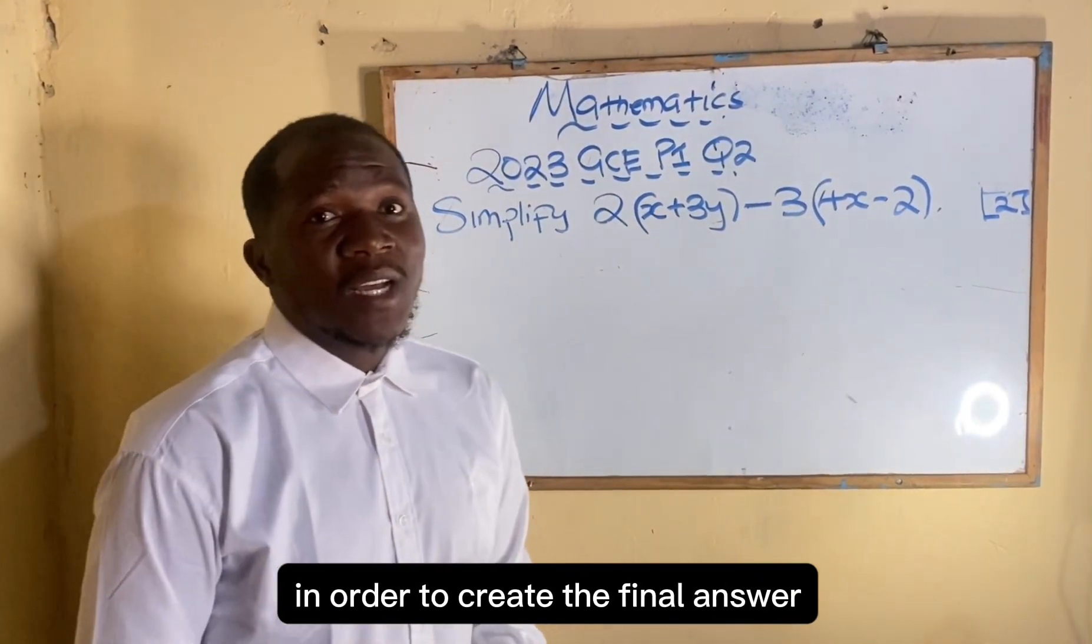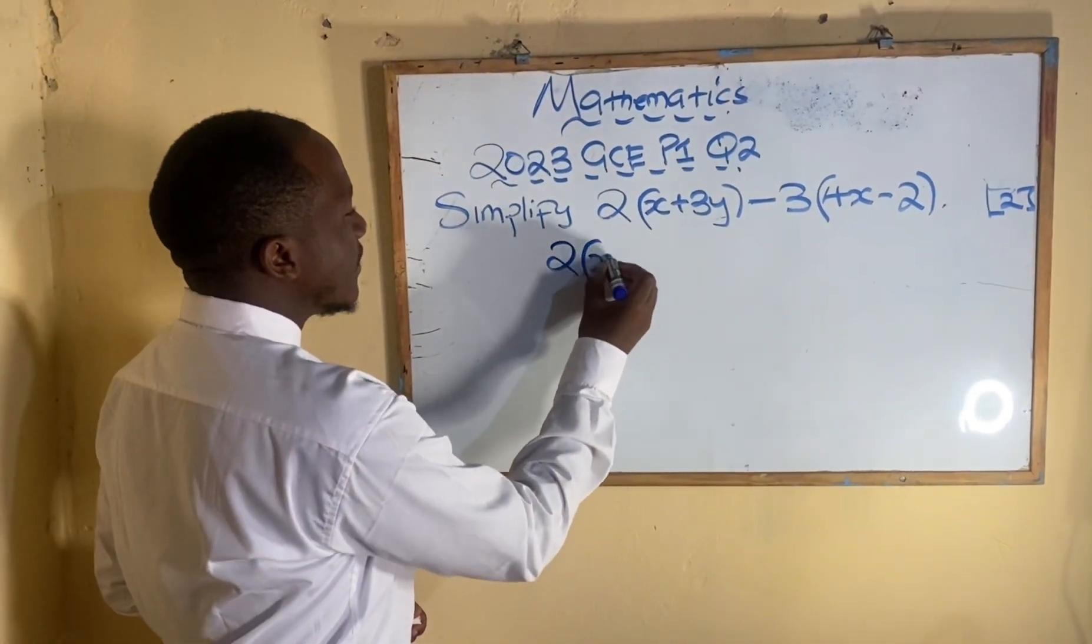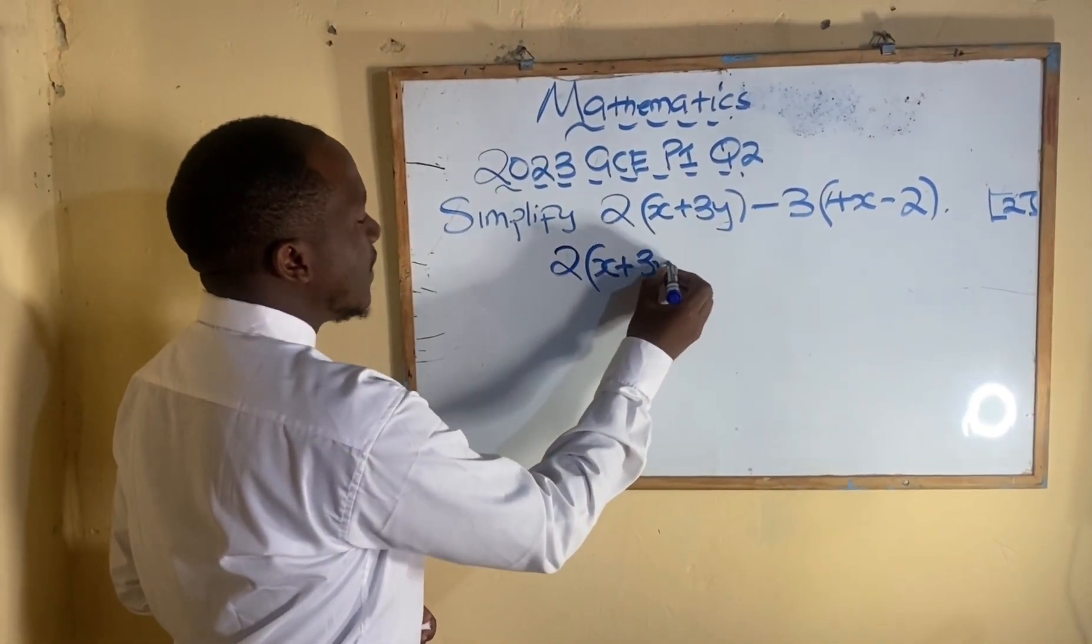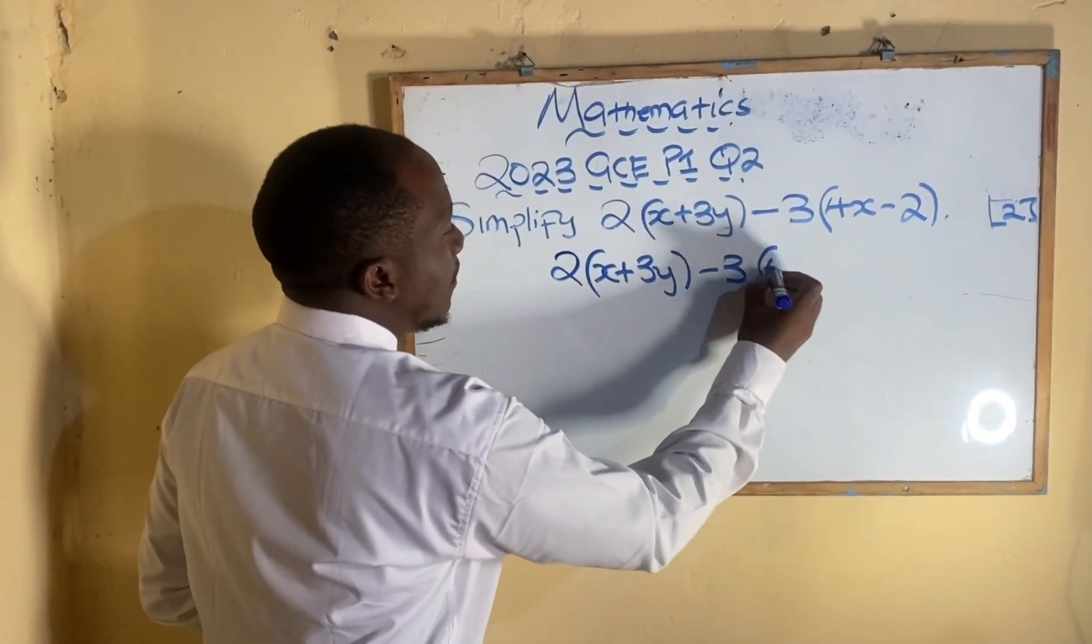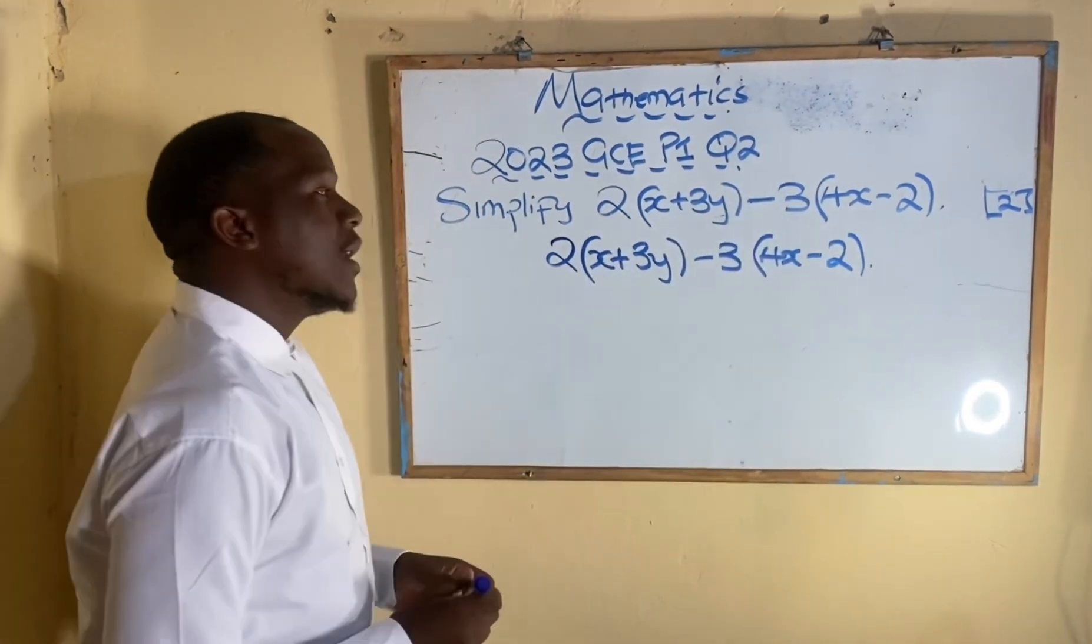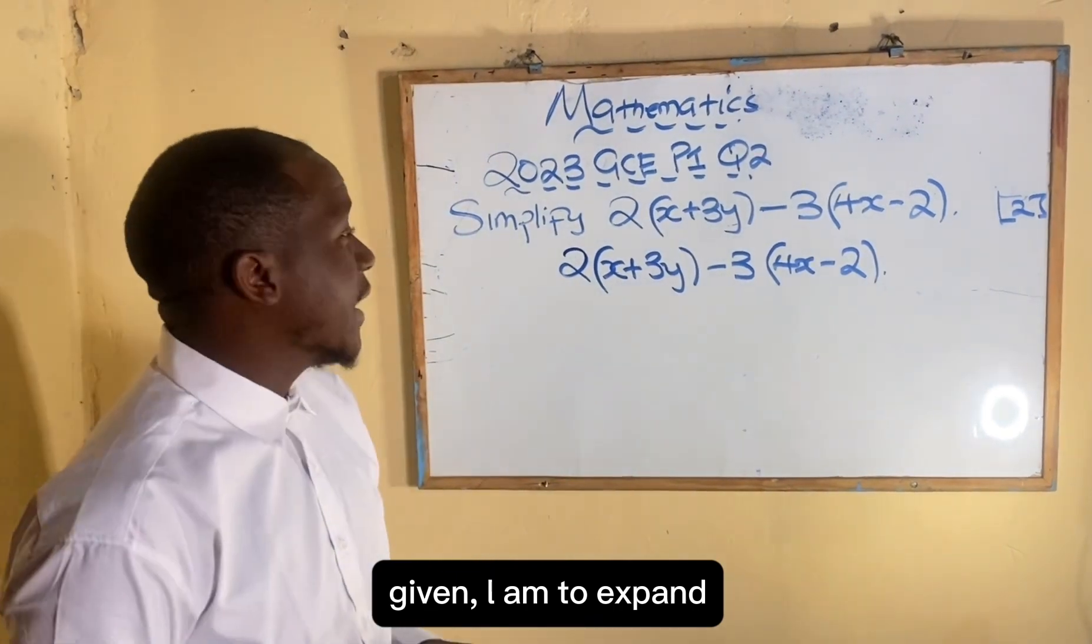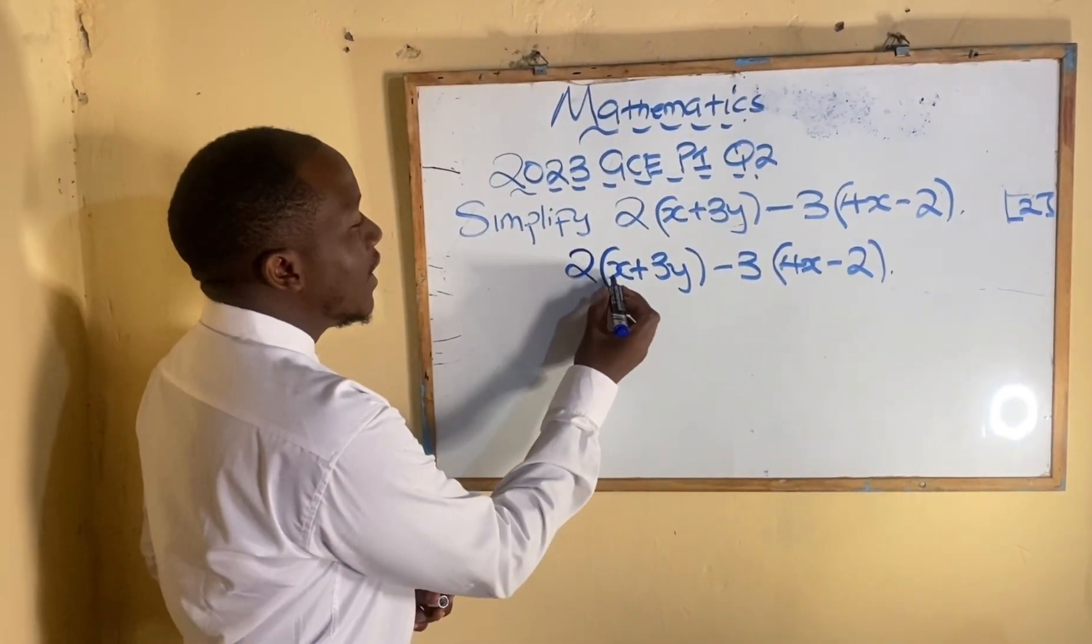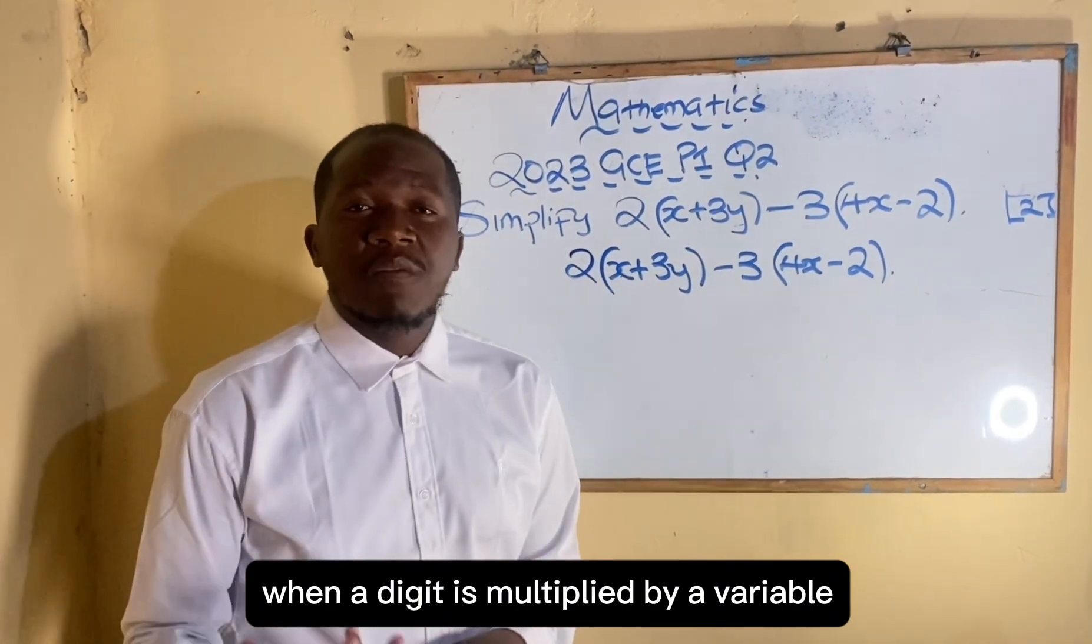So we're going to say this is 2(x+3y)-3(4x-2). Since I have rewritten the expression given, I am to expand.